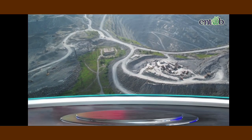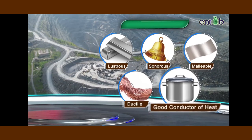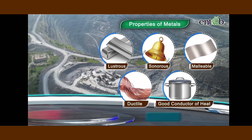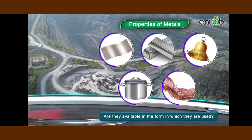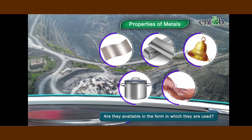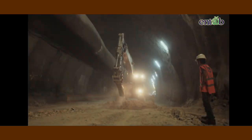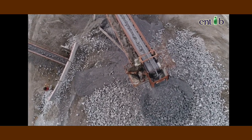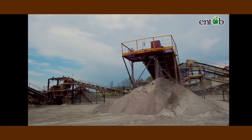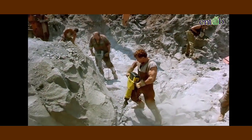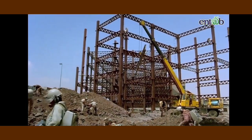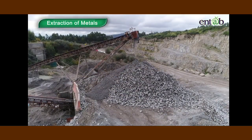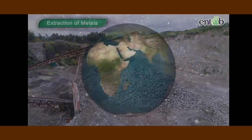Hello everyone. In our previous modules, we learned about the characteristics of metals. However, the question that arises is: where do we obtain these metals? Are they available in the form in which they are currently being used? Look at this carefully. Have you seen such machines anywhere? Can you recall something like this from your previous classes? Perhaps you have seen some of these sites in movies? If yes, what was it all about? Yes, it must have been about the location and extraction of metals and mineral reserves around the world.